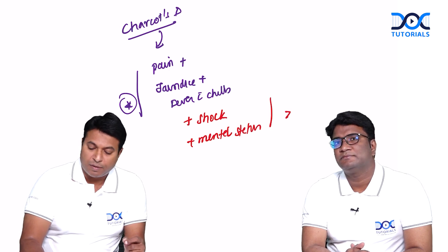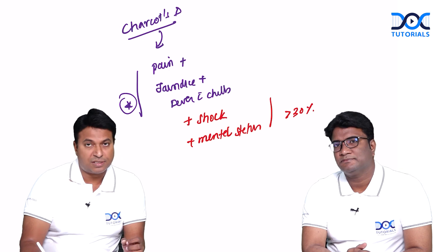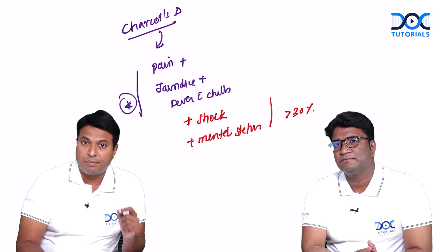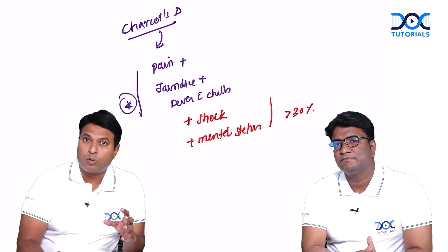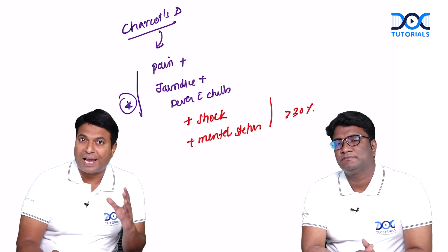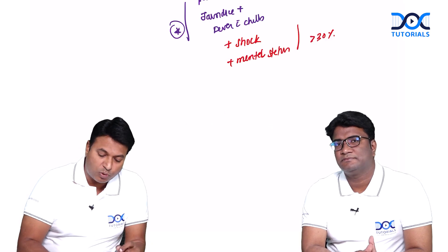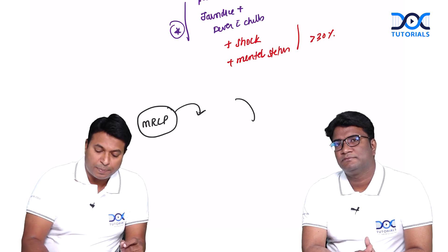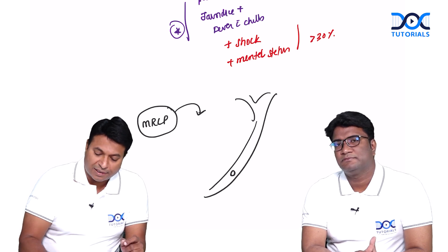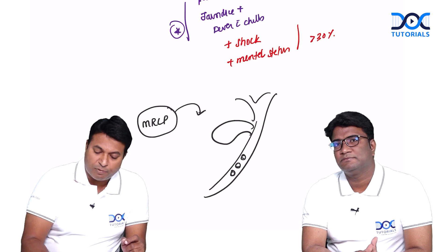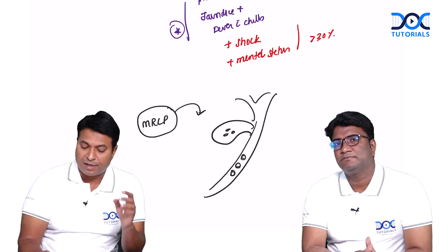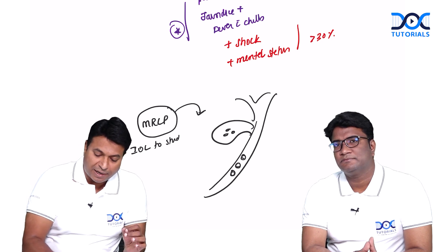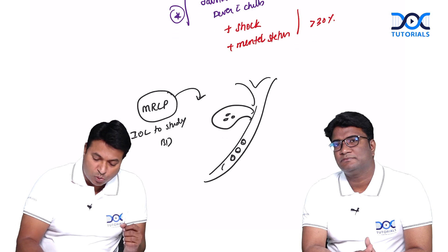Reynolds pentad carries mortality greater than 30 percent — it is a surgical emergency. To confirm it is a CBD stone, because ultrasound may not always pick up the CBD stone and can only show dilated bile duct radicals, we go for an MRCP. MRCP will show stones in the bile duct, forming a road map for further planning — it differentiates stone from cancer. MRCP is the investigation of choice to study the bile duct.